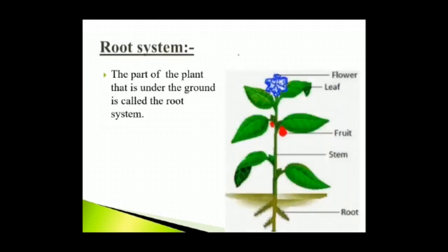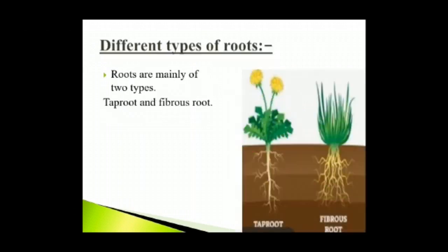The part of the plant that is under the ground is called the root system. Root grows deep down inside the soil. Roots are mainly of two types: tap root and fibrous root.